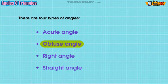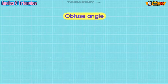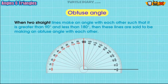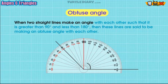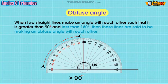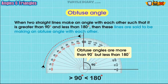Obtuse angle: when two straight lines make an angle with each other such that it is greater than 90 degrees and less than 180 degrees, then these lines are said to be making an obtuse angle with each other.